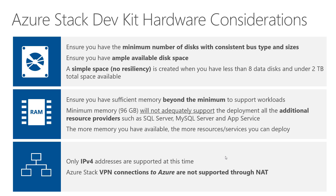As far as networks are concerned, no IPv6 — only IPv4 is supported. A quick note: Azure Stack VPN connections to Azure are not supported through the NAT. The Development Kit is all behind a BGP NAT VM. Because it's behind the NAT, VPN connections from a resource group in Azure Stack to a resource group in Azure are not supported, as those connections via NAT are not supported. Azure Stack to Azure Stack connections are supported and documented.